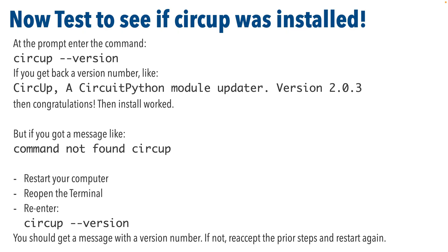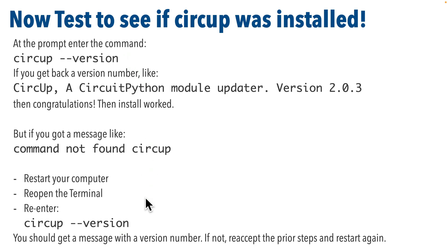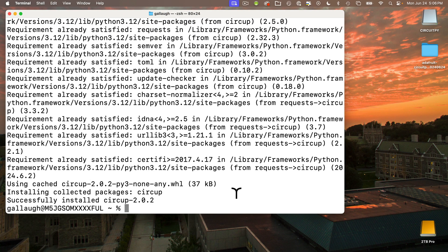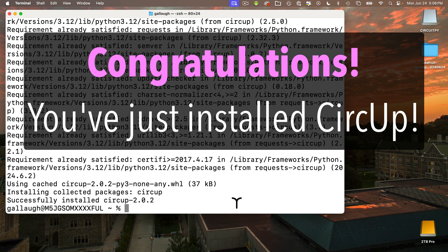I have a quick update from an earlier version of this lesson. Try entering the following command at this point: 'circup --version'. If you get back a message listing the Circup version number, bravo and congratulations — you've properly installed Circup. But I've seen situations where you enter the command and get back a message that says 'command not found: circup'. If that happens, the installation above probably installed something that doesn't take effect until your computer is completely restarted. So restart your computer, reopen your terminal, and try typing 'circup --version' again. If not, try repeating all the installation steps and restarting your computer one more time. Congratulations — you've just installed Circup and you shouldn't have to repeat these steps again.